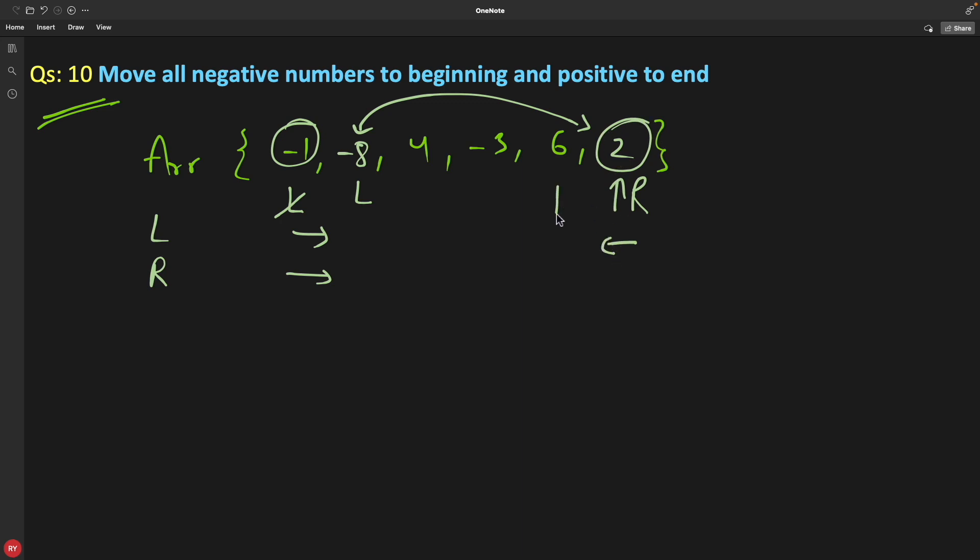So you will swap, then it will look like this. So we have minus 8 and 2 here. So once you do this swap, you have to decrement this R also. Now R will come here. And obviously your left will move here.